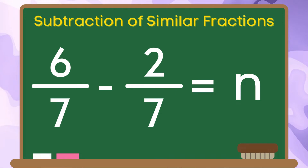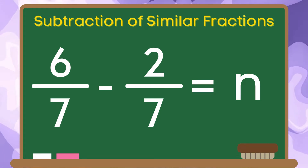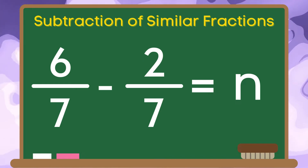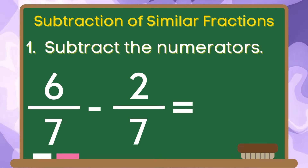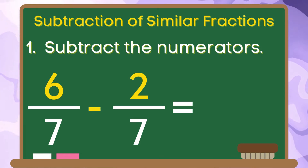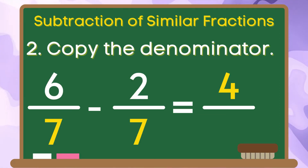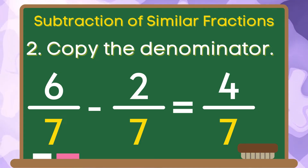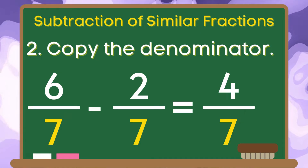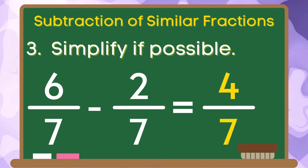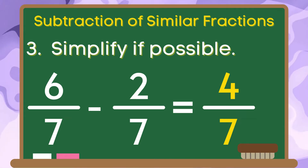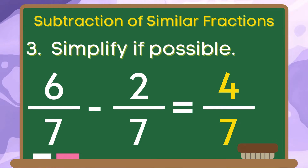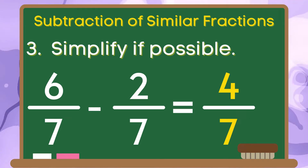Let us have another example. We have six-sevenths minus two-sevenths is equal to n. Step one: subtract the numerators. Six minus two is equal to four. Step two, let us copy the denominator seven to our answer. And for the last step, let us simplify our answer. Since four and seven does not have common factors, the final answer and the difference between six-sevenths and two-sevenths is four-sevenths.